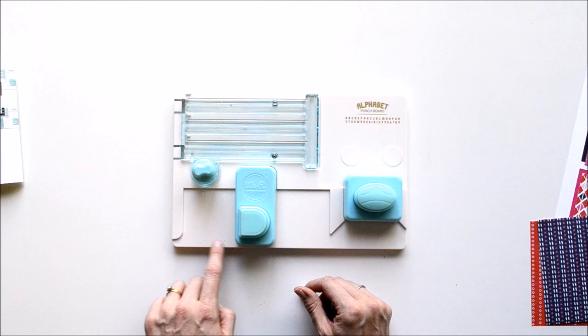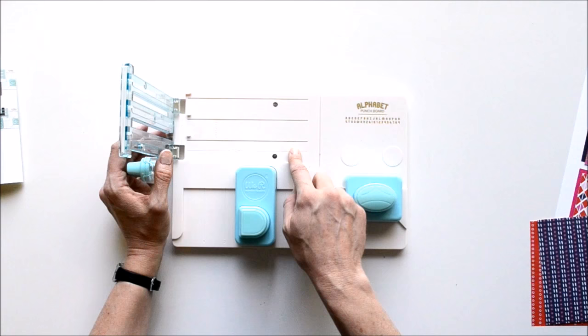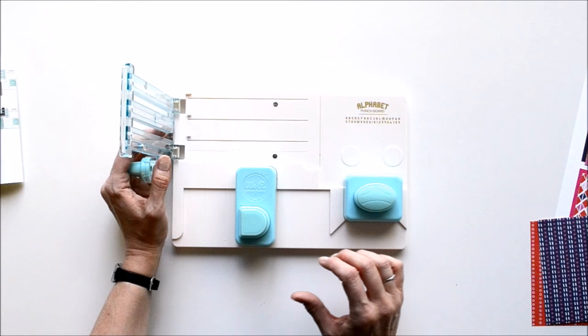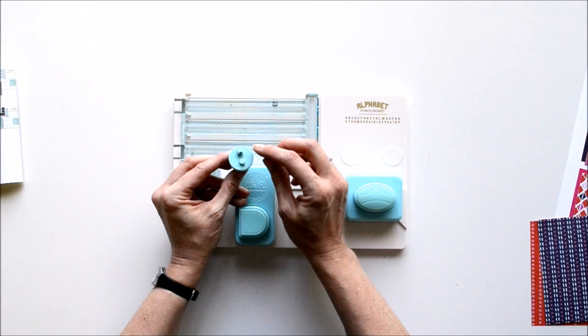You'll notice here on the board there are a couple different numbers on here on this punching place and also under here under the cutting place, and those are just to help you with the instructions to line your paper up in exactly the right spot for each letter or number.